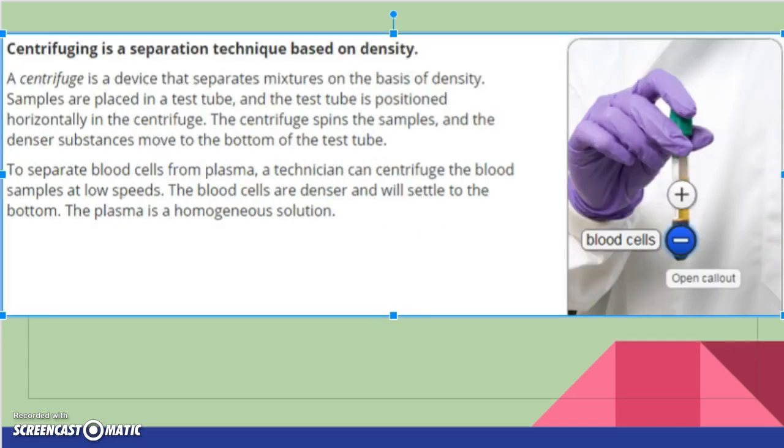And we can also separate based on centrifuging, and this is huge in medical. To separate blood cells from plasma, a technician can centrifuge the blood sample at low speeds. The blood cells are denser and settle to the bottom and the plasma stays on top. So in this case, plasma is not talking about solid liquid gas plasma. The plasma in your blood, same name, very different thing, it's a portion of your blood. Like you have red blood cells, white blood cells, you also have plasma.